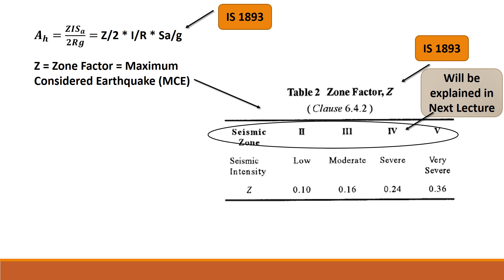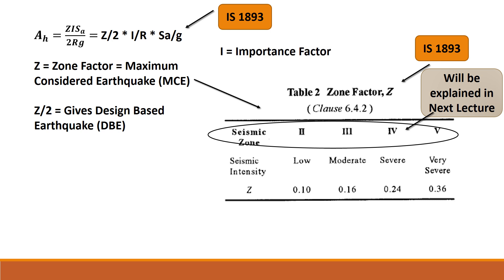The Z factor gives us the maximum considered earthquake that can be expected in a region. Z/2 as a factor in Ah gives us the design basis earthquake, so it's 50% of the Z factor. Then comes the importance factor I, and finally the R, which is the response reduction factor.